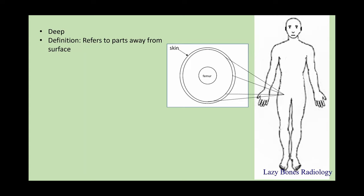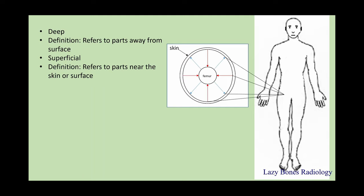Deep refers to parts away from the surface or the skin. As you can see in the picture, the closer you are to the bone, the deeper the relationship. Superficial refers to parts near the skin or surface. As you go away from the bone towards the skin, you have a more superficial relationship to the part.